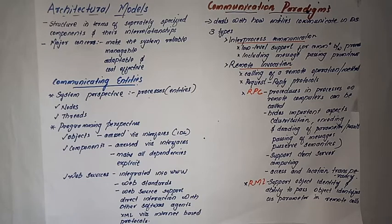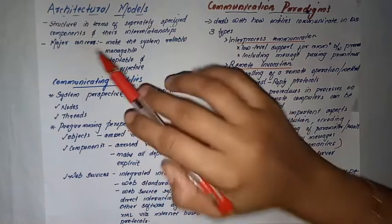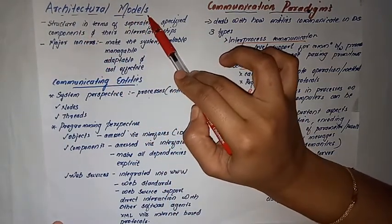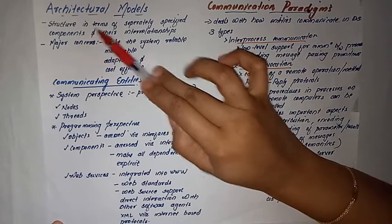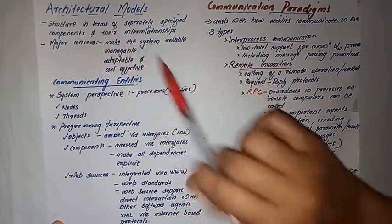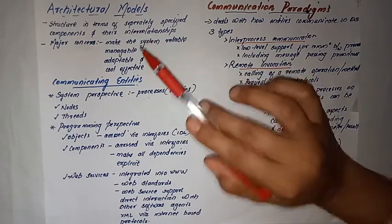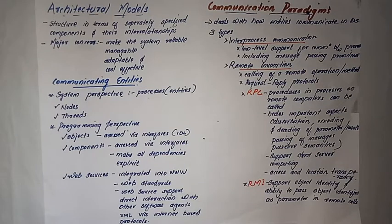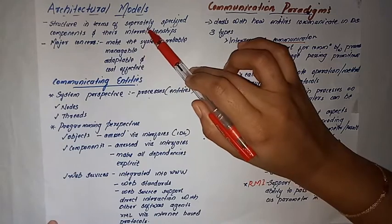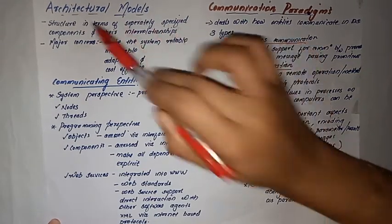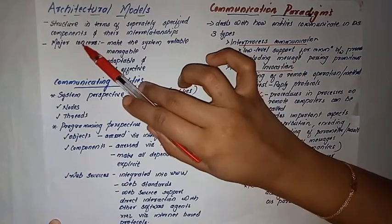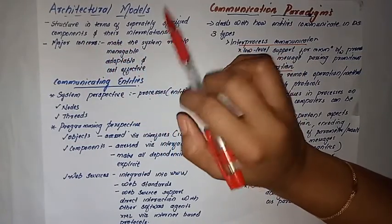An architectural model describes the structure of a distributed system in terms of separately specified components and their interrelationships. In a physical model we can see the hardware components, but in an architectural model the focus is on separately specified components and how those components relate to each other.